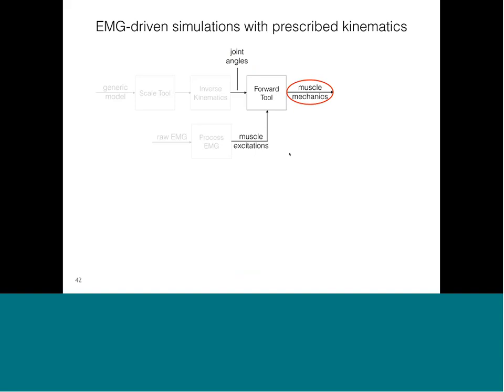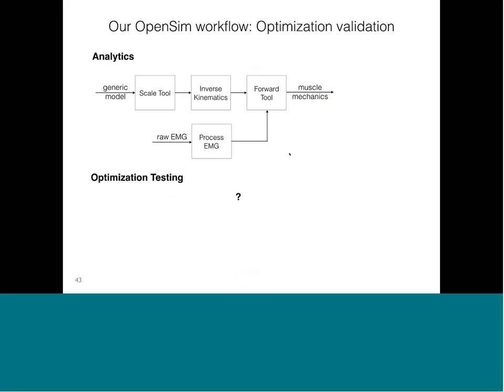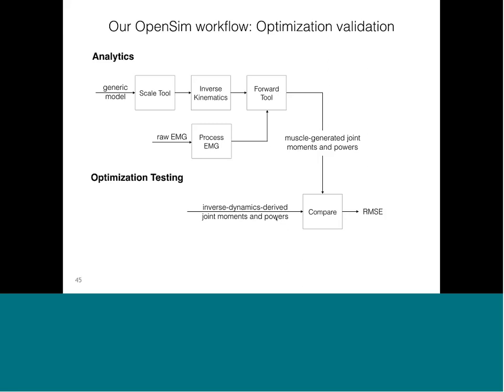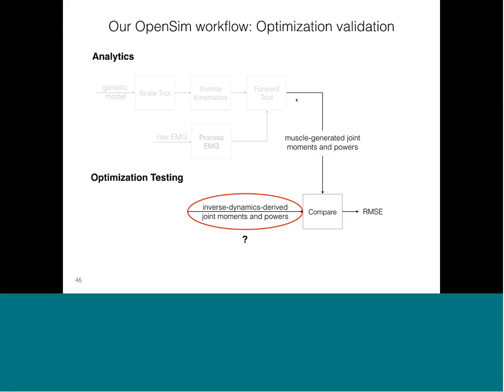To test that our optimization of scaling and delay factors for EMG was reasonable, we needed to do some validation. We compared moments and powers about the ankle joint generated by muscles to inverse dynamics derived joint moments and powers. We could calculate muscle-generated joint moments and powers by taking the muscle tendon mechanics from our forward simulations and using musculoskeletal parameters such as lever arms. We then used the inverse dynamics tool in OpenSim, which takes in external loads and outputs joint moments and powers.